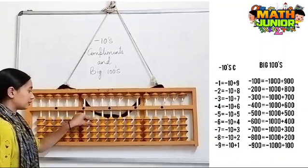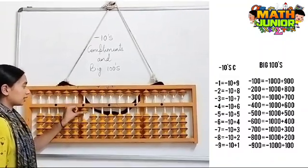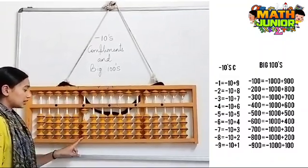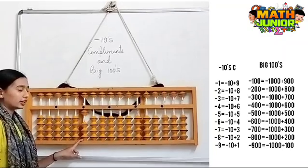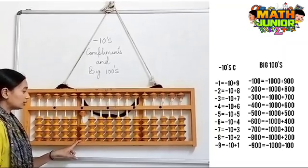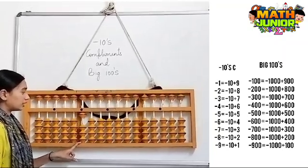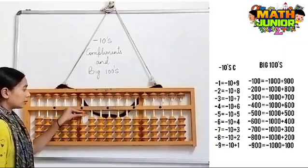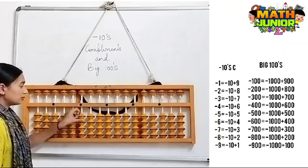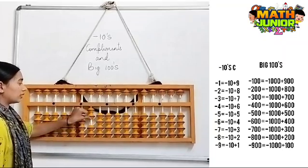Next, I have 1000 here and I need to remove 800. So the formula for minus 800 is minus 1000 plus 200.